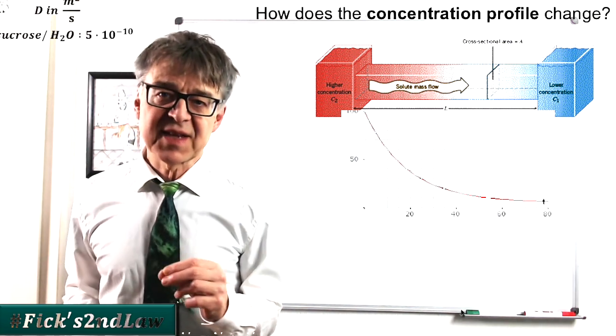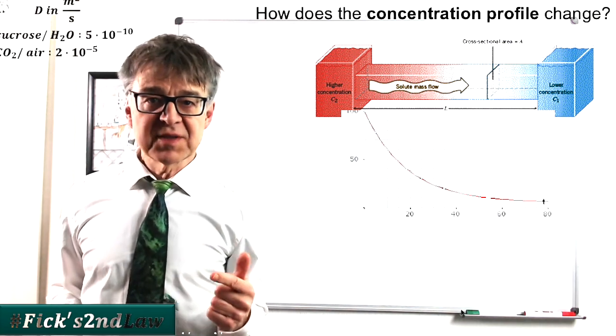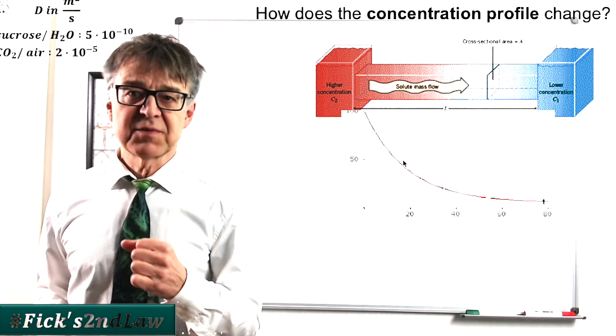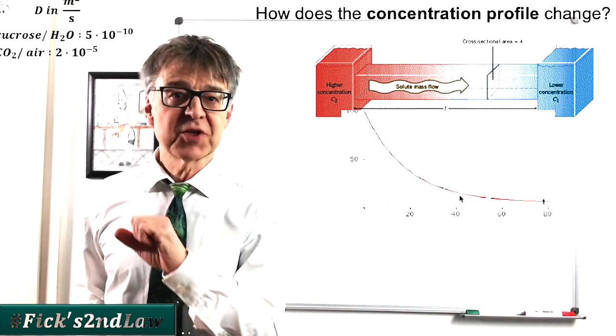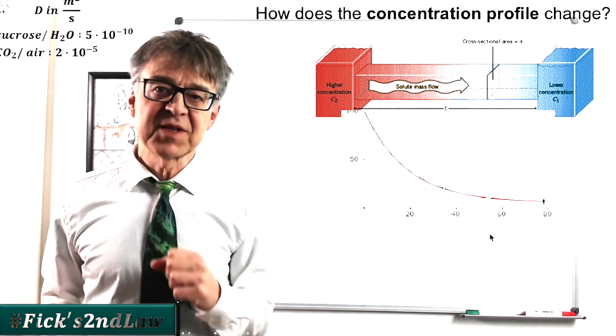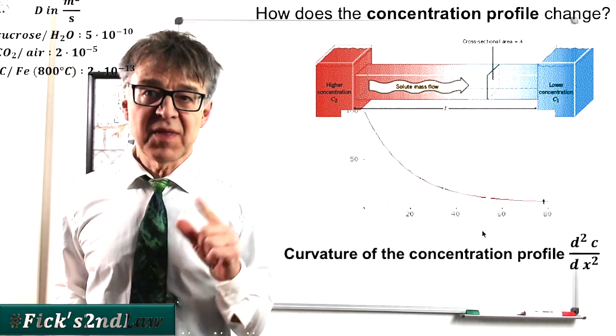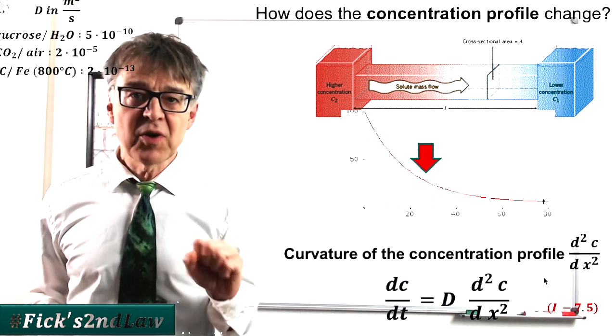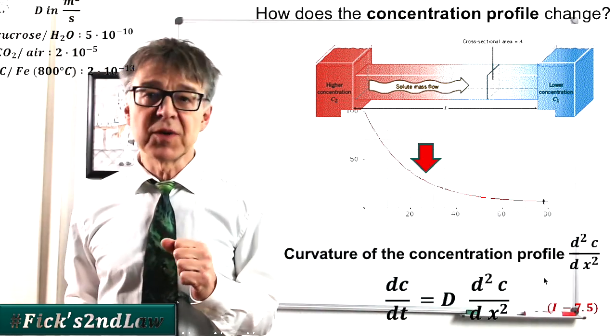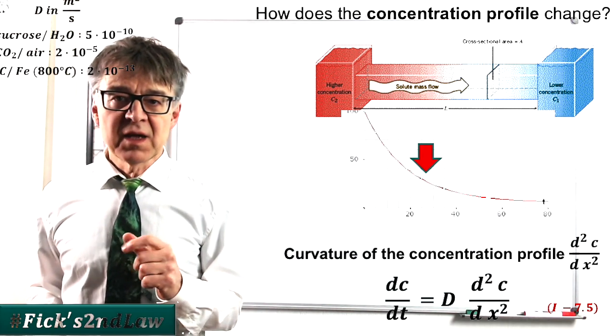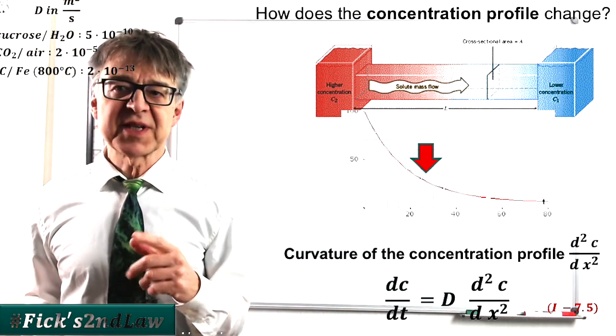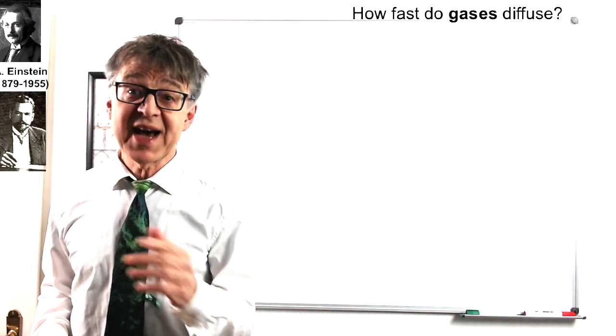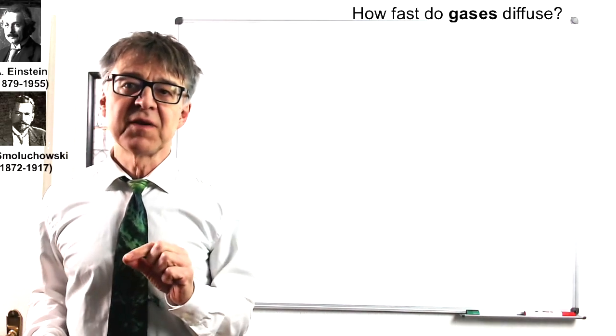With unsteady state or transient diffusion, the concentration in the system changes over time. The change in concentration is proportional to the curvature of the profile. This is Fick's second law. The arrow marks the point of largest curvature in our example. At this point, the concentration will change the most. The diffusion of gases can also be explained with the kinetic gas theory. Again, small and light gases diffuse fastest.